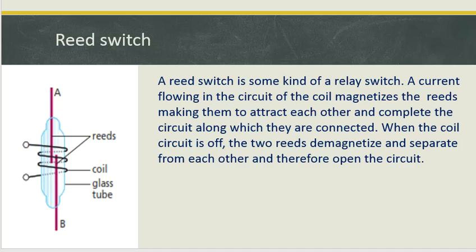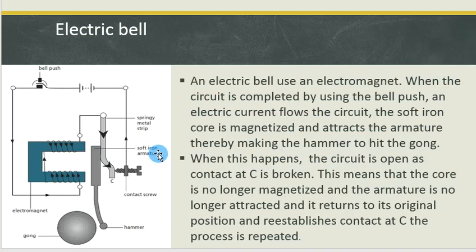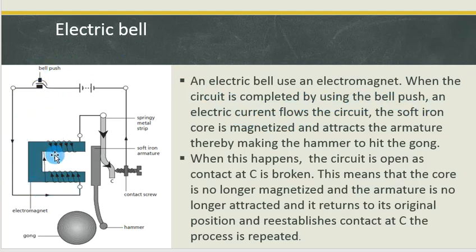The last part of our lesson is the application of the magnetic effect of an electric current in an electric bell. An electric bell uses an electromagnet. When the circuit is completed by pushing the bell push, please take note that current is flowing in opposite directions in the two arms of the electromagnet — the coil on one side and the coil on the other — to ensure that two opposite poles develop. Using the right-hand rule, one side will be the south pole and the other will be the north pole.